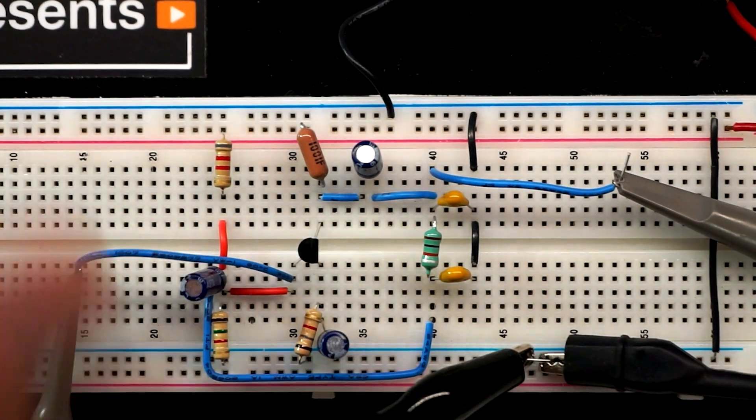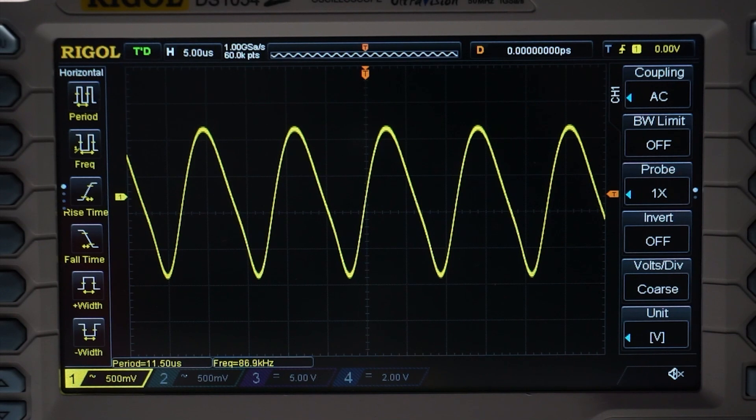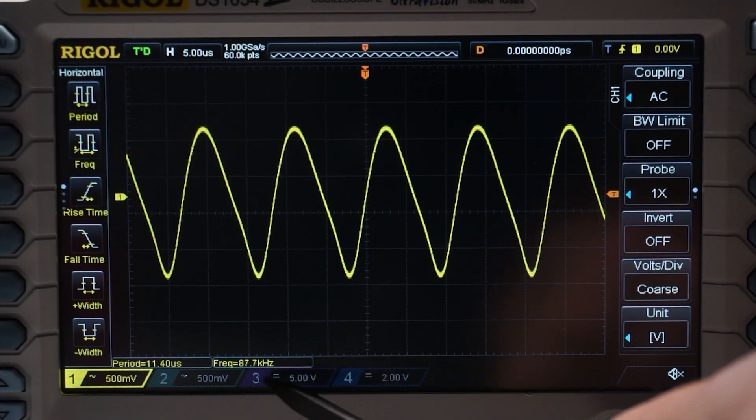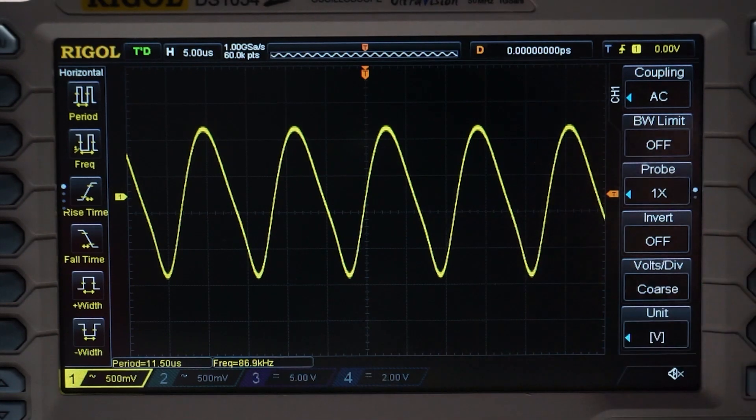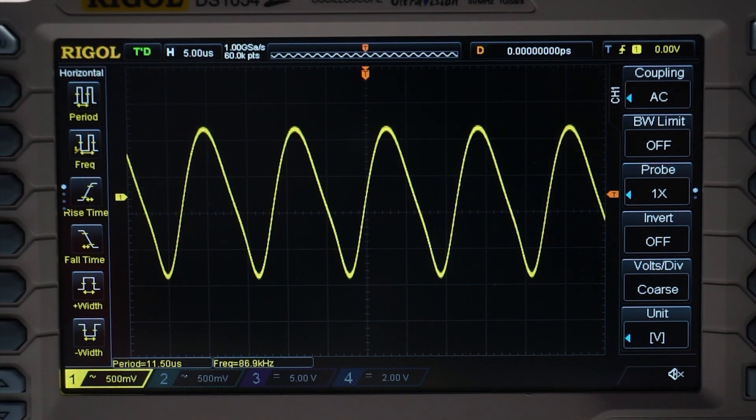Let's turn the scope on. Let's turn on channel one. You can see it kind of resembles a sine wave. And it looks like our frequency is 86 kilohertz. So we're almost 10 kilohertz off from our frequency that we calculated. Part of it is component tolerance. The inductor and capacitor have their own tolerance ranges, but that's a pretty big change.